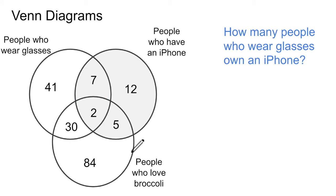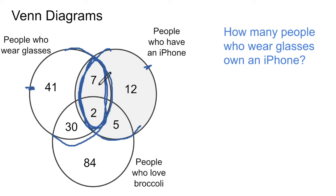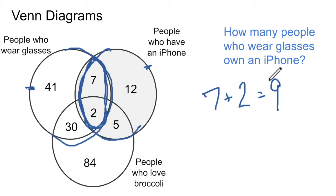Same diagram, different question: how many people who wear glasses own an iPhone? We're looking for the count of people who wear glasses and own an iPhone — in other words, they're in both circles. The intersection of the glasses circle and the iPhone circle contains the numbers 7 and 2. The iPhone circle is the gray one, and the glasses circle is the white one, and their intersection is 7 plus 2, which equals 9. Nine people both wear glasses and own an iPhone.